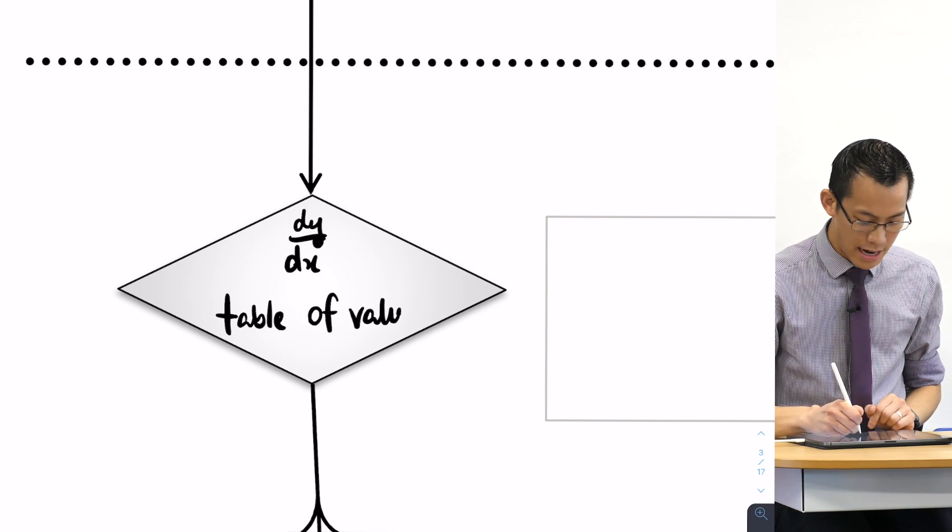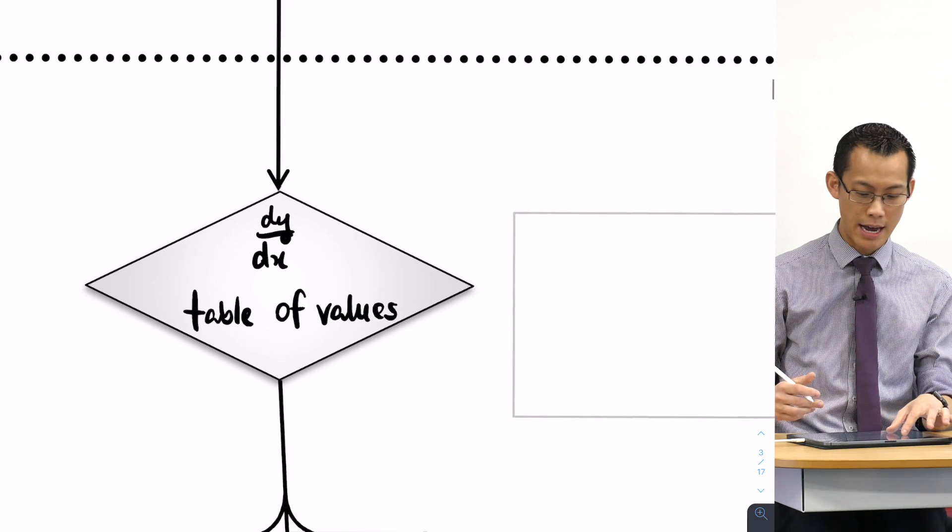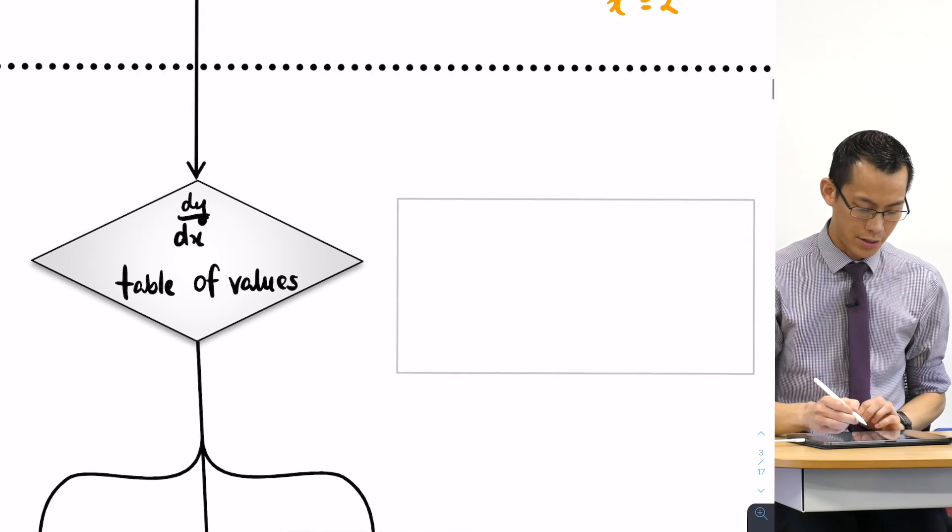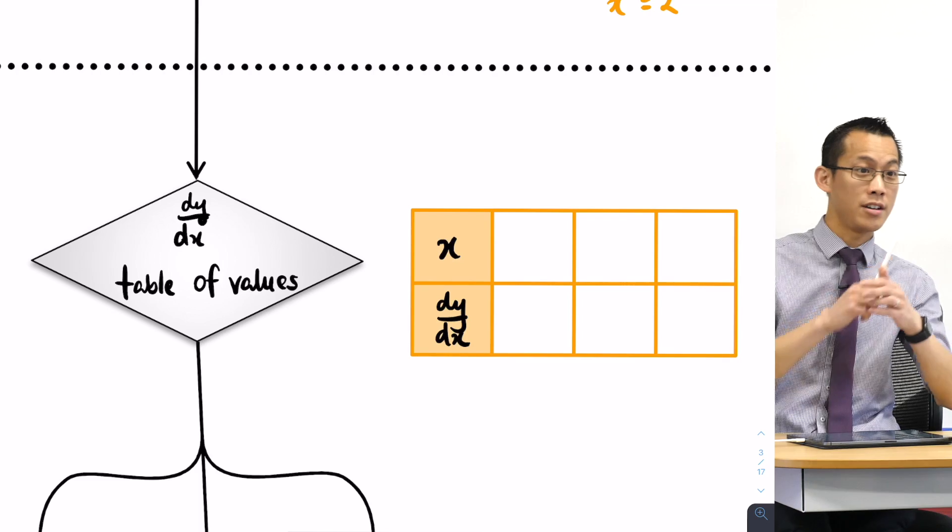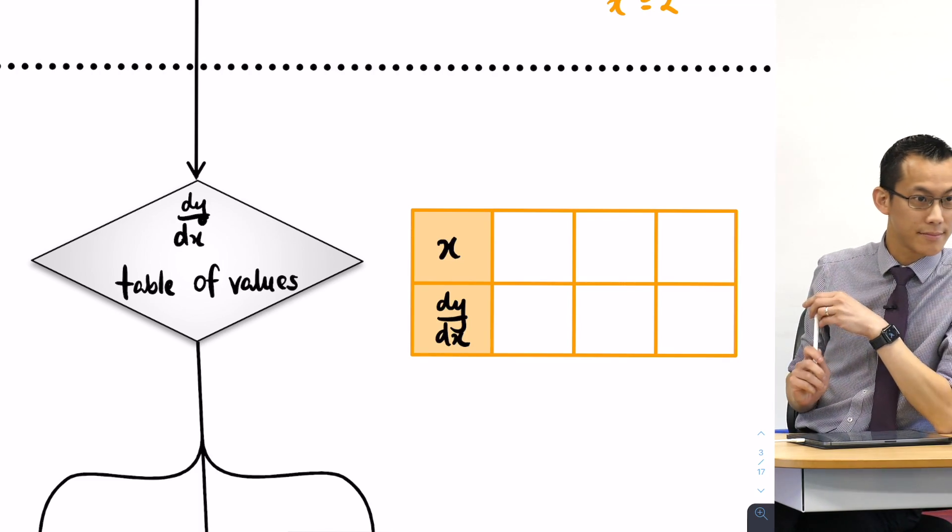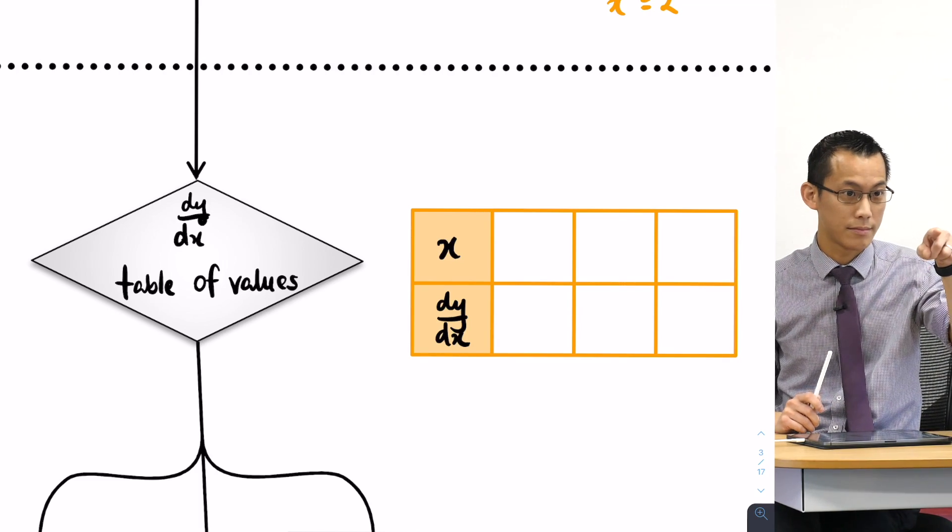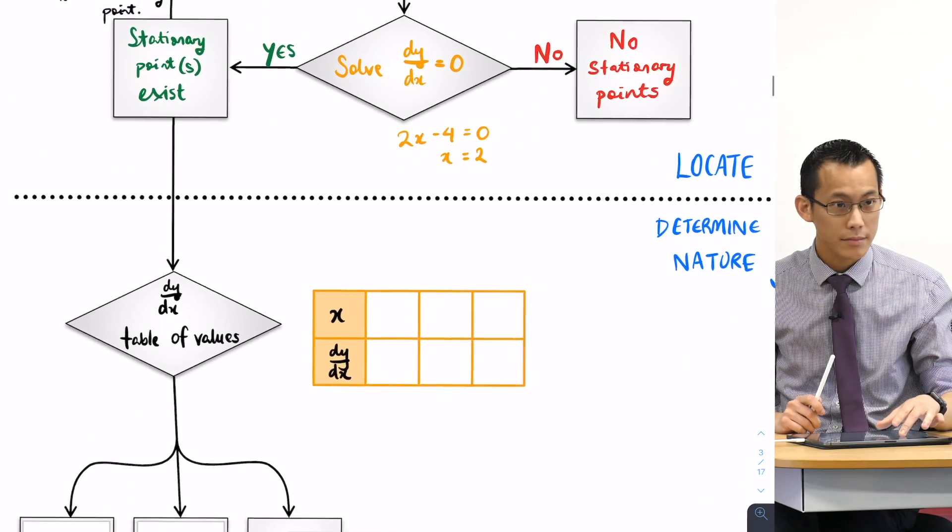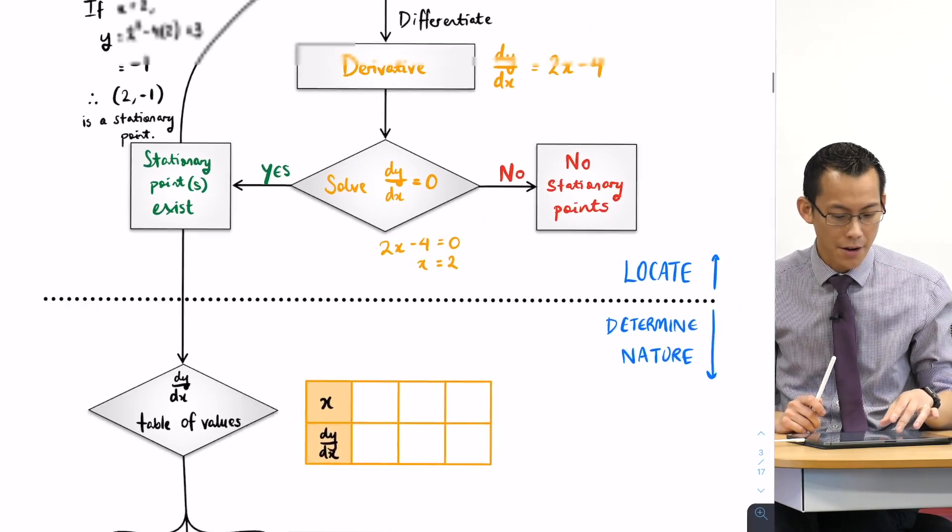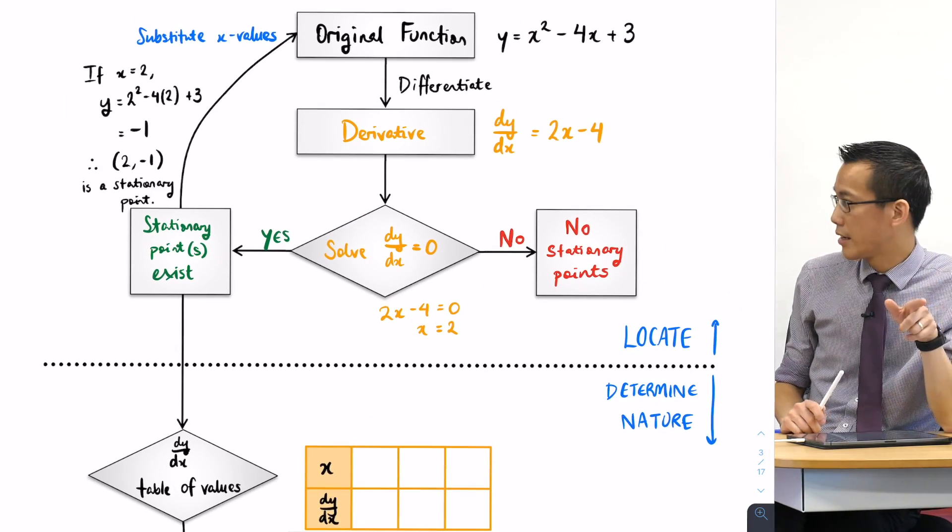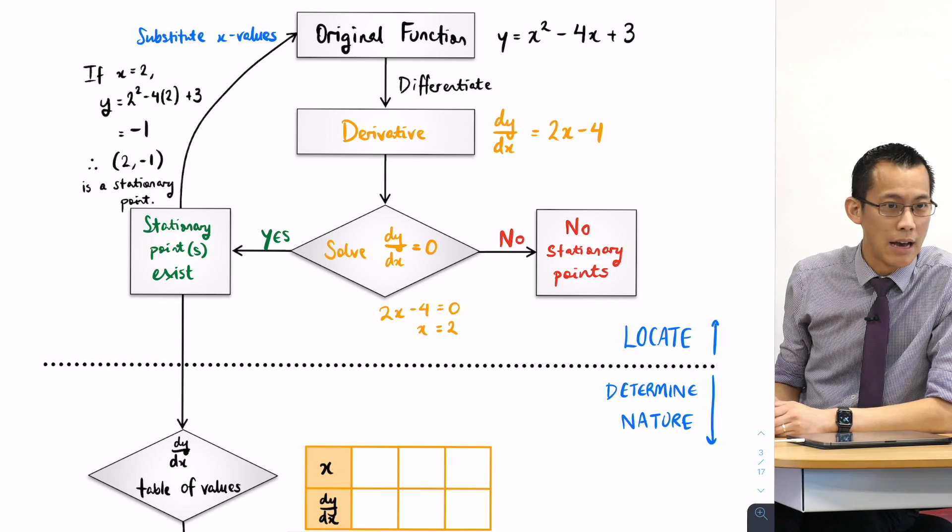At the moment, this is our only tool for determining what kind of stationary point it is, so here's one I prepared earlier. In this case, can we not just draw the original function and then find where the stationary point is and then see if it's increasing? Okay, so are you asking at this point can I not just graph it and then off I go?